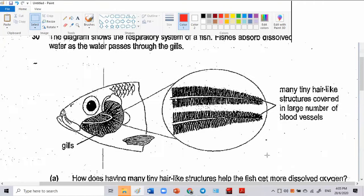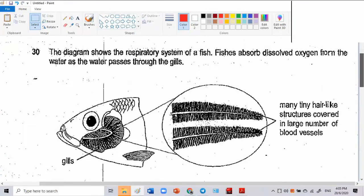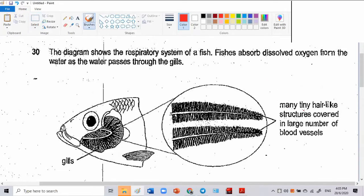The diagram shows the respiratory system of a fish. Fish absorb dissolved oxygen from the water as the water passes through the gills. Can you see? Look at what they say. They have many tiny hair structures covered by what? Large number of blood vessels. You have a lot of blood vessels to cover them. Because the blood goes by, they have exchange of gases. So, fish absorb the dissolved oxygen from water as the water passes through the gills.